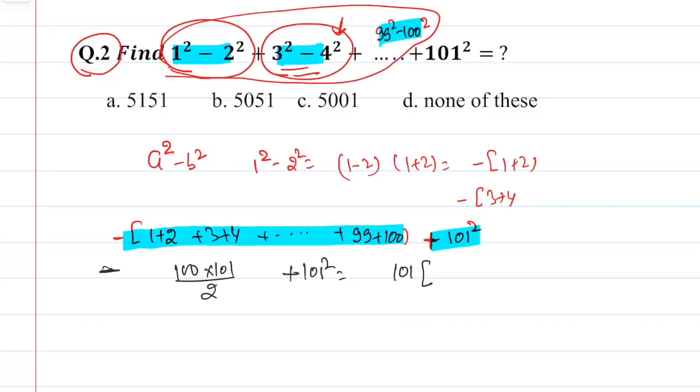Now take 101 common, here you have 100 divided by 2 with minus plus 101. So this one is minus 50. So you have finally 101 into 51 and it is quite easy to multiply 101 and 51 is 5151 and this one is the answer of our question.